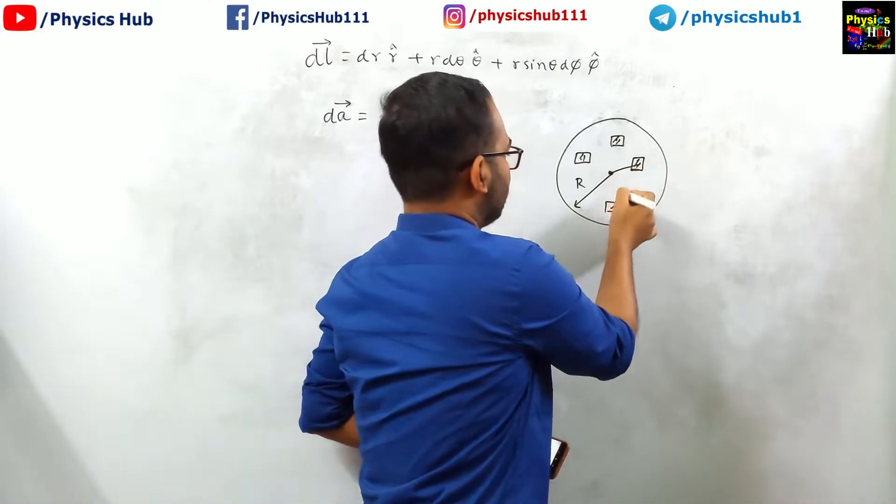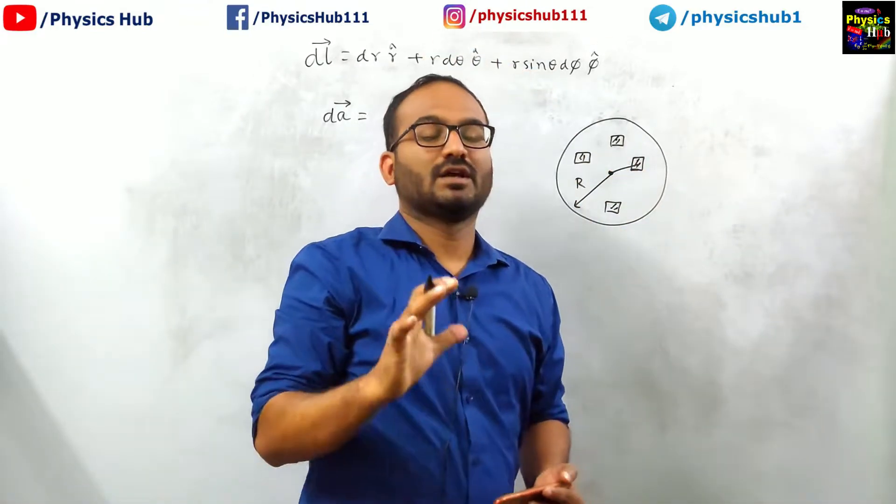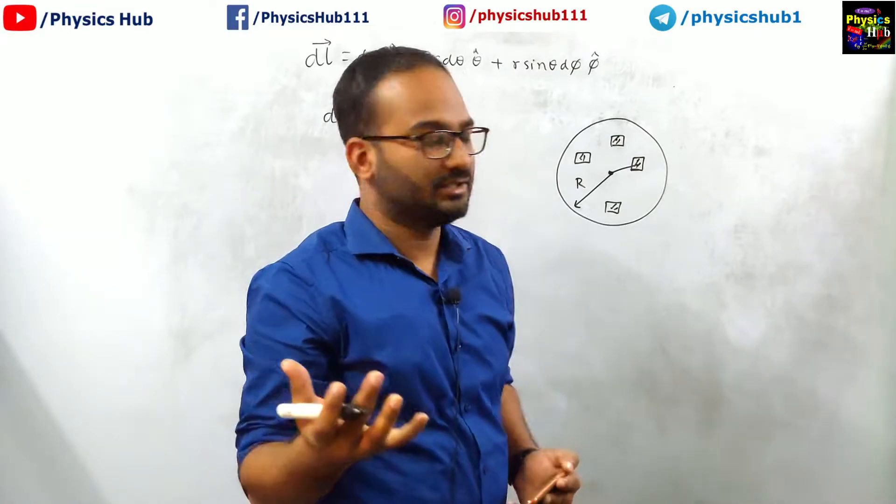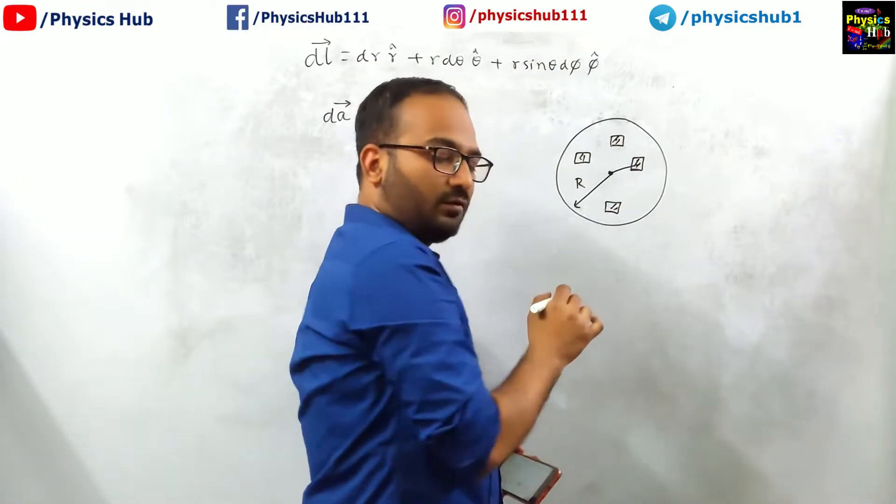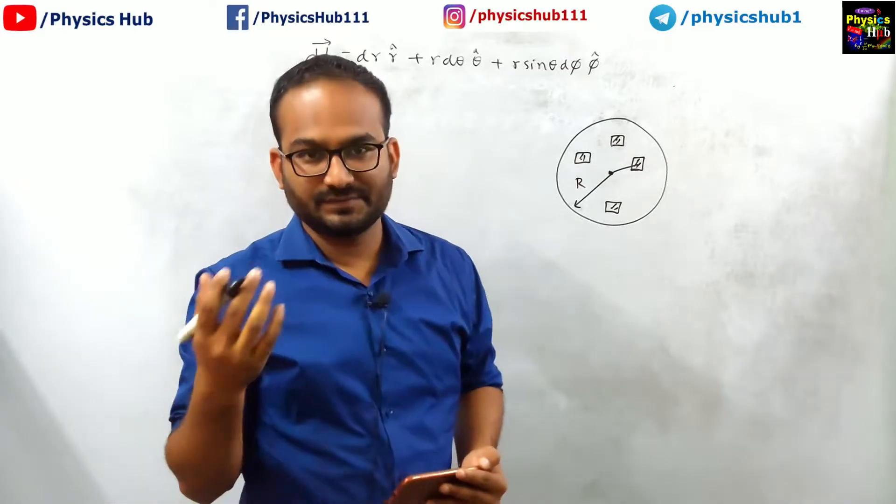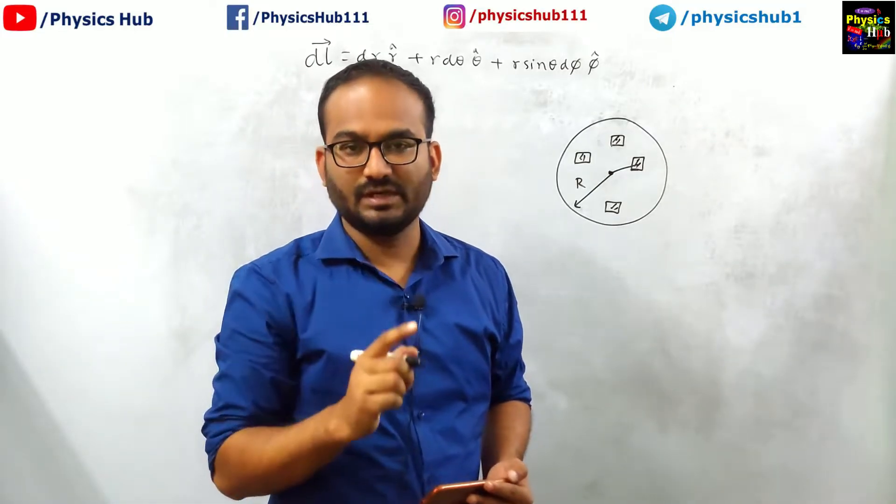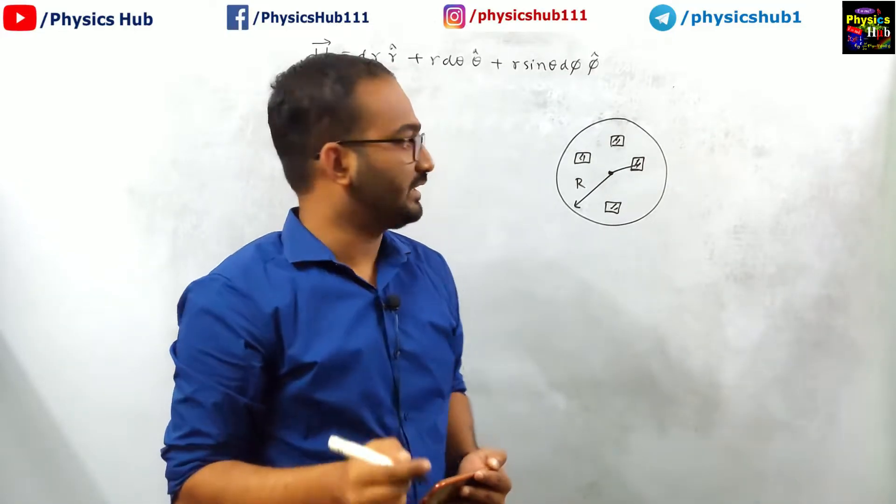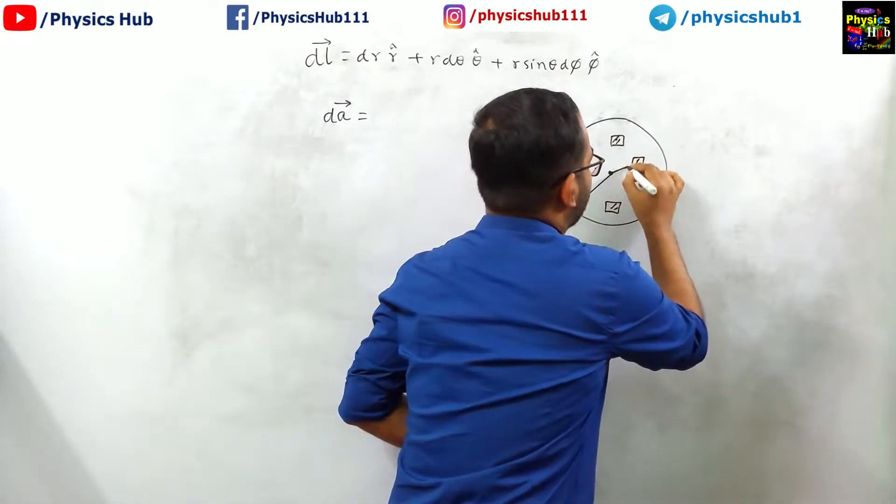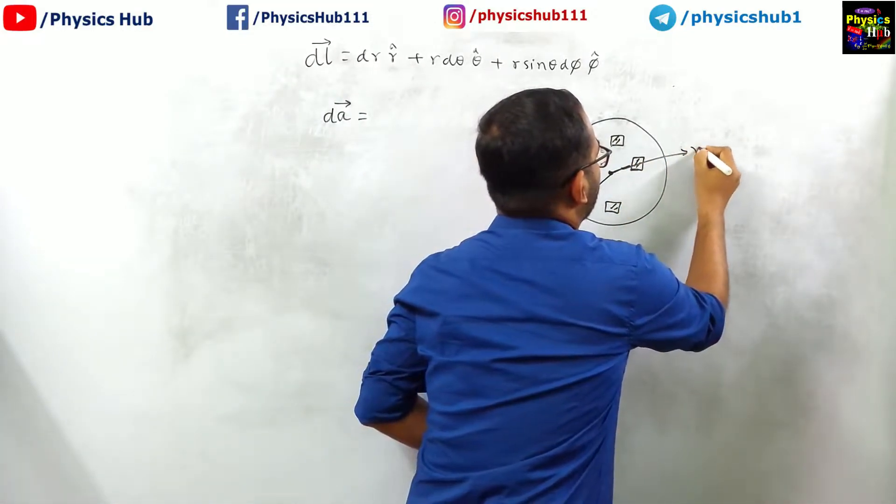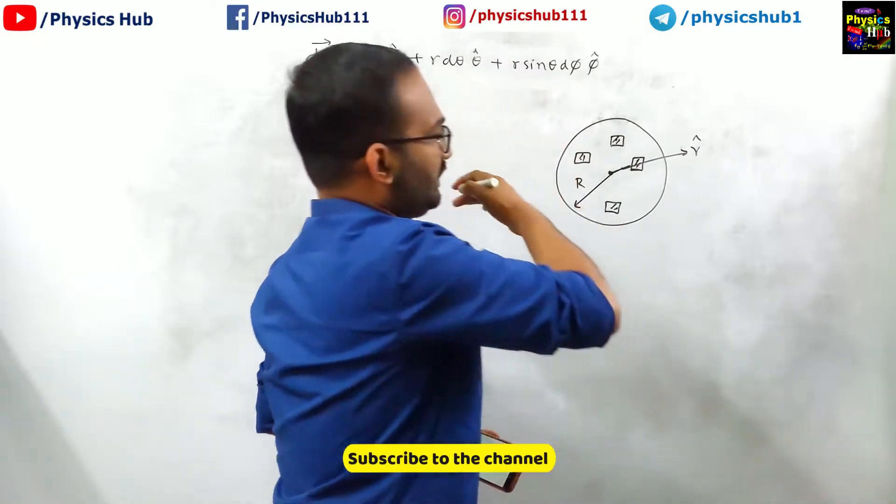r is fixed because r is the radius of this sphere, you can consider a football. So r is same everywhere. Now whatever quantity remains fixed, that will be the direction of the surface area. So here the direction of the surface area will be r cap, radially outward.